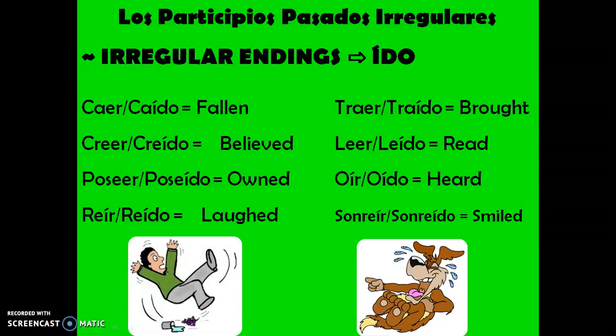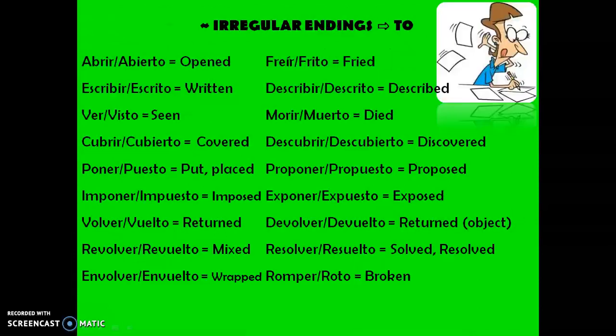So those are the irregular accented -idos. Our next irregular group of past participles are going to end in -to. Let's say those together, left to right. Abrir — abierto — opened. Freír — frito — fried. Escribir — escrito — written. Describir — descrito — described. Ver — visto — seen.